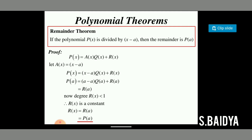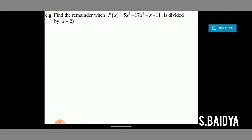Now let us go through some examples of the remainder theorem. The first example: find the remainder when p(x) = 5x³ − 17x² − x + 11 is divided by x minus 2. From the remainder theorem, x minus a means a = 2.